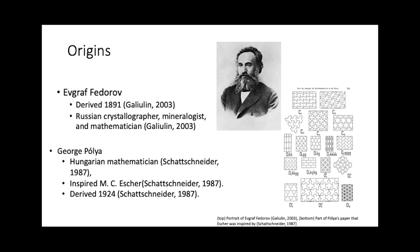It is used by artists like M.C. Escher, who played around with impossible spaces, hyperbolic parabolas, and infinite spaces. He was very inspired by the work of George Pólya, a Hungarian mathematician who worked on these types of patterns. George Pólya derived them in 1924, and his work, although very much known in the West, wasn't really the first to exhibit these patterns. Evgraf Fedorov, a Russian crystallographer, mineralogist, and mathematician, was the first one who derived them in 1891.